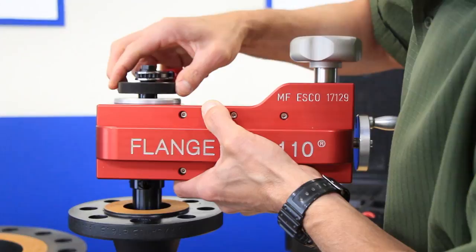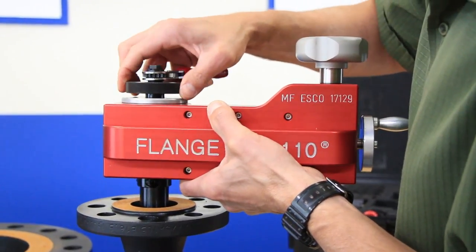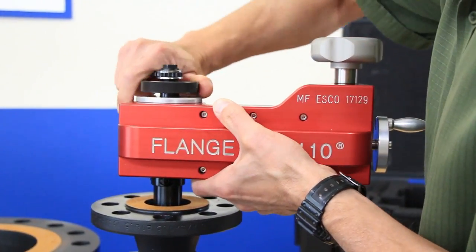As the ribs expand, slightly jostle the tool forward, back, and side to side so that the clamp ribs can properly seat and accurately self-center.